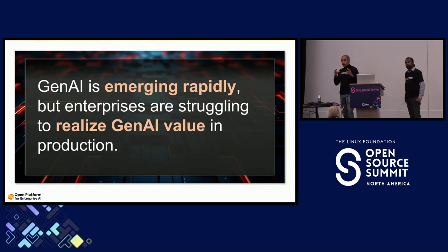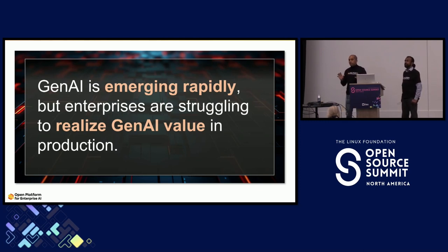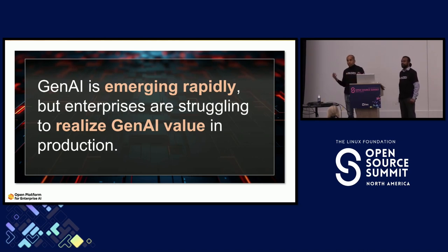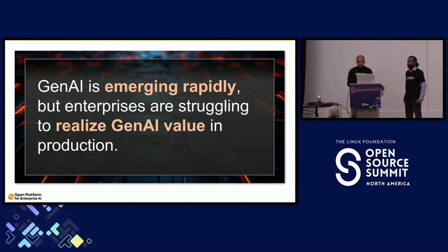If I'm building a Gen AI solution, what are the core components? If I'm building a RAG pipeline, what would the core components look like? Can I swap those components? Should they be open or closed? How would I scale this? How would I validate this kind of a solution? Those are all the common questions, and as Intel is an IT company, our own customers are asking these questions.